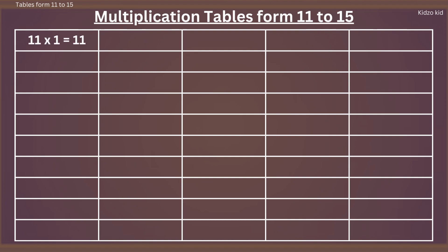11 ones are 11, 11 twos are 22, 11 threes are 33, 11 fours are 44, 11 fives are 55.